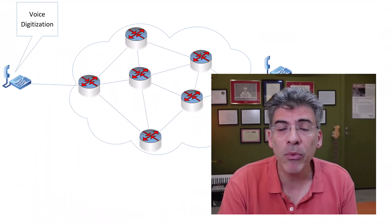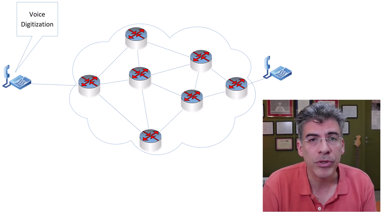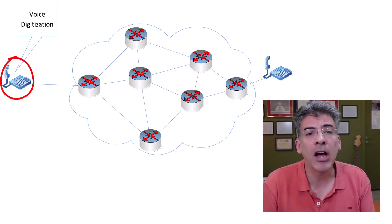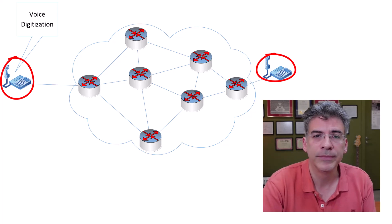We'll explain a little bit more about those, but first, let's take a brief overview of what a VoIP communication looks like. Here we have an IP network with two IP phones. Let's assume that this phone here is making a call to this phone.